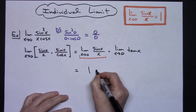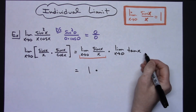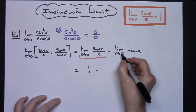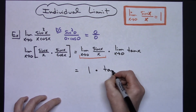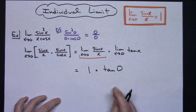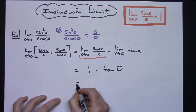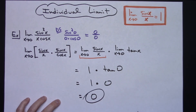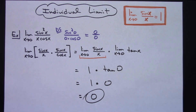So I'm going to have 1 times the limit as x approaches 0 of tangent x. I just need to do a direct substitution here — plugging in 0, I'm going to have tangent of 0. Tangent of 0 is 0, so I'm going to have 1 times 0, which gives me an overall limit of 0. Applying that property that we know and showing the correct algebraic steps to separate that limit, you can justify an answer of 0.